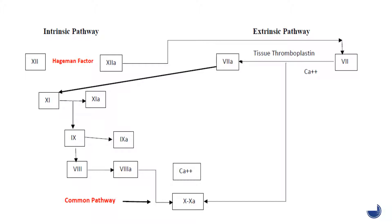For the extrinsic pathway: damaged endothelial cells release tissue factor, also known as tissue thromboplastin. This leads to activation of factor 7 to factor 7a. Tissue factor combines with activated factor 7 in the presence of calcium ions and causes the conversion of factor 10 to factor 10a.